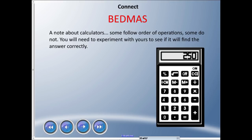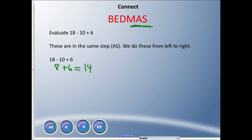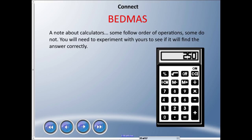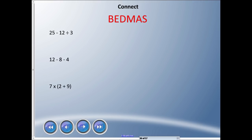A quick note about calculators: some follow the order of operations, some do not. If you try entering 16 − 14 ÷ 2 from left to right as written, your calculator may or may not find the correct answer. Fancier calculators — like graphing calculators you get in high school — can probably handle it, but a basic dollar-store calculator probably won't. You may have to enter operations in the correct order yourself. Pause here and try the three examples on your own.